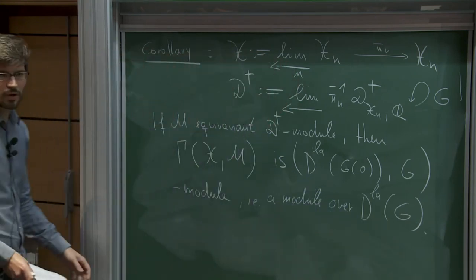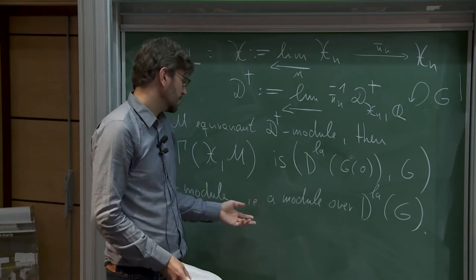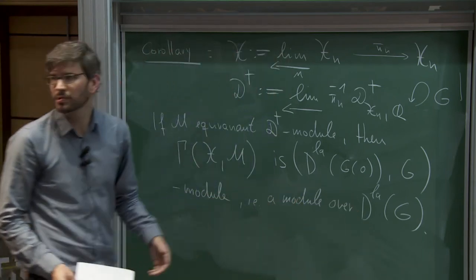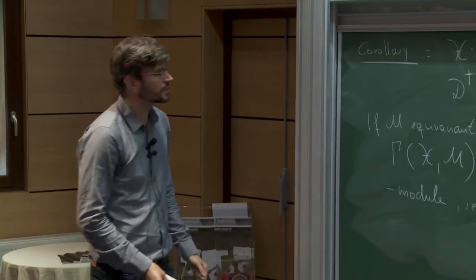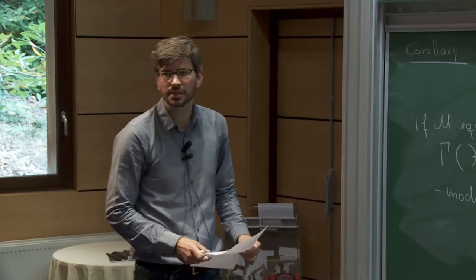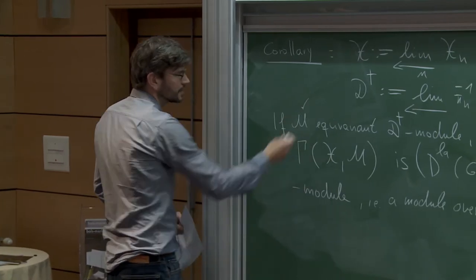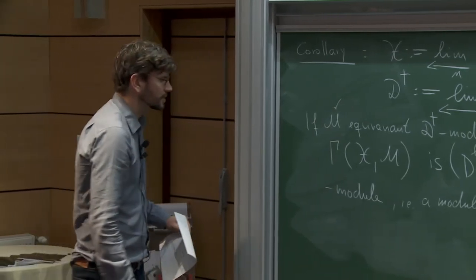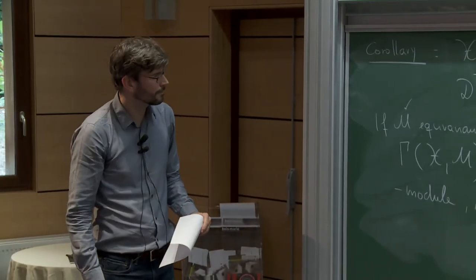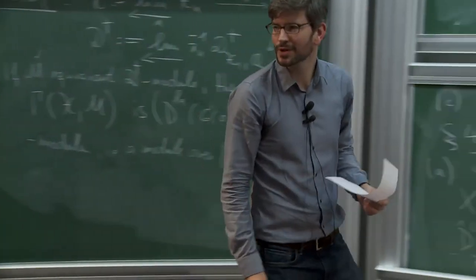Of course, if one wants to talk about locally analytic representations, then one has to take into account topologies — a locally analytic representation is a module over this ring plus certain topological prerequisites. But if one carefully goes through all the arguments and keeps track of the topology, then one might eventually put natural conditions on this equivariant module such that one actually gets on global sections a true locally analytic representation. So this is where we are at the moment, and this is my talk. Thank you.